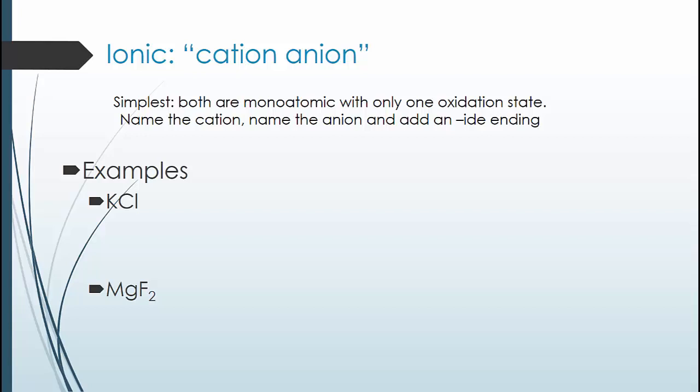For the first one, KCl is potassium cation and a chlorine anion. This gives us potassium chloride. For the second one, we have MgF2. Magnesium is a plus two ion. Fluorine is a minus one ion. To balance these charges, we must have two fluorines for every one magnesium.